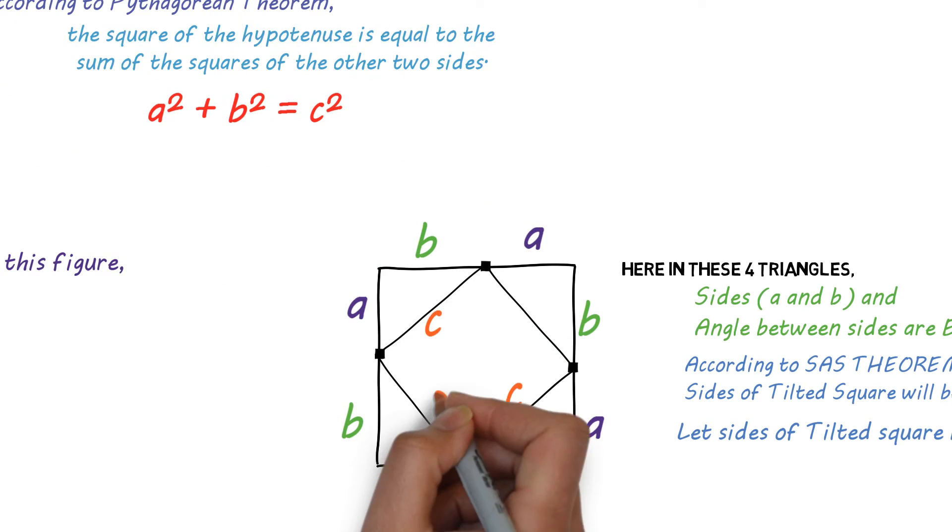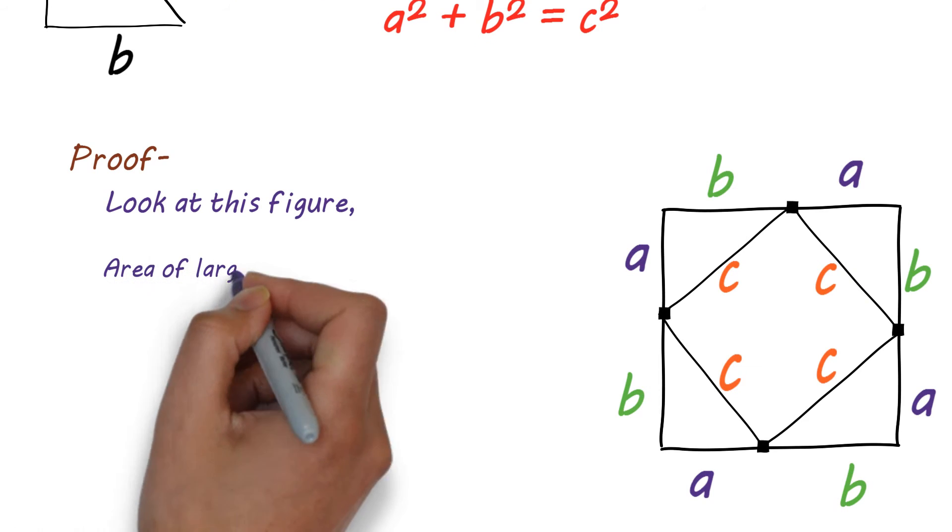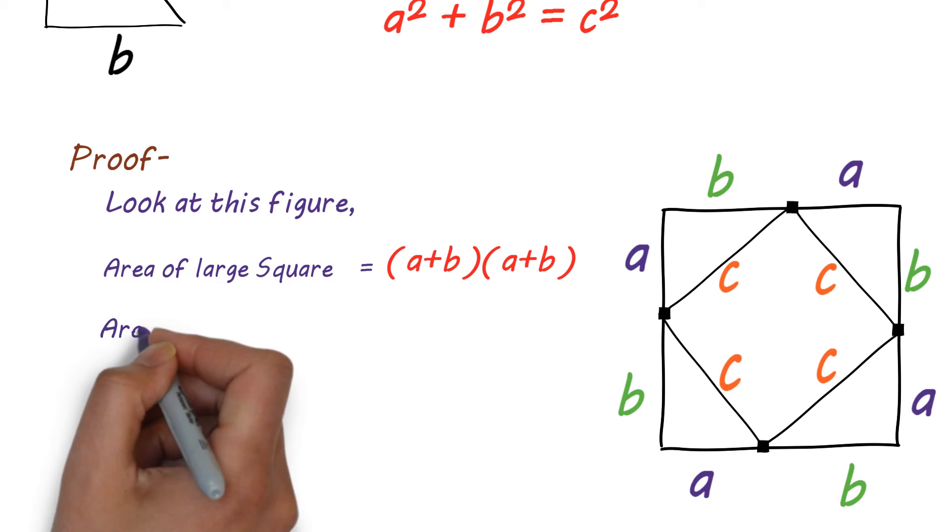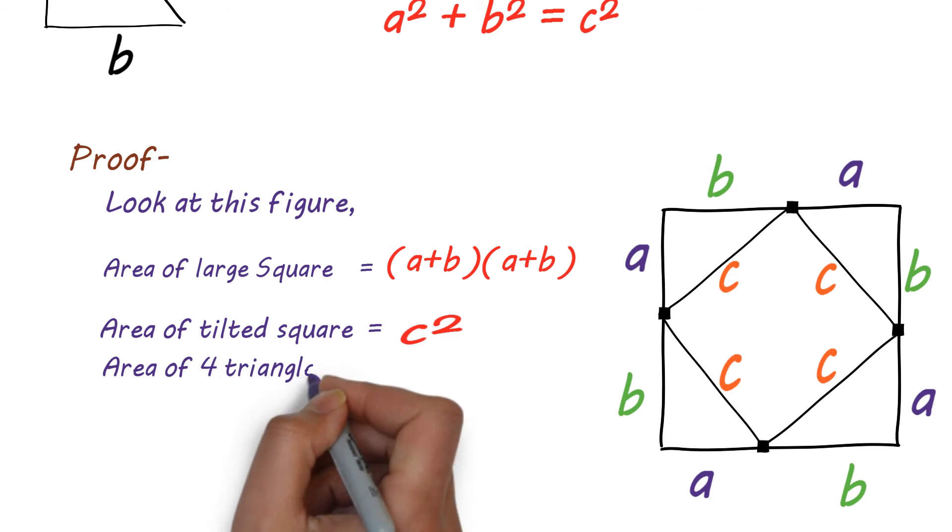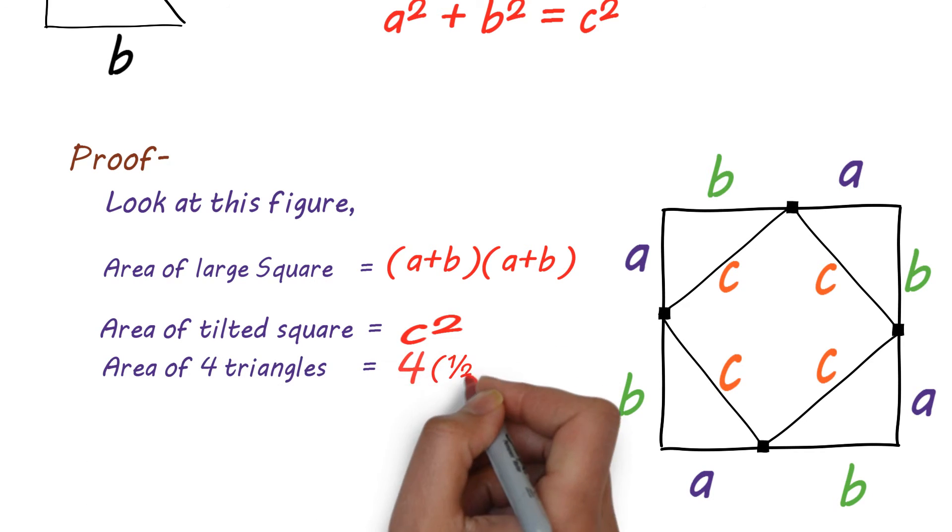So, area of large square is equal to A plus B times A plus B, area of tilted square is equal to C squared, area of four triangles is equal to four times half AB.